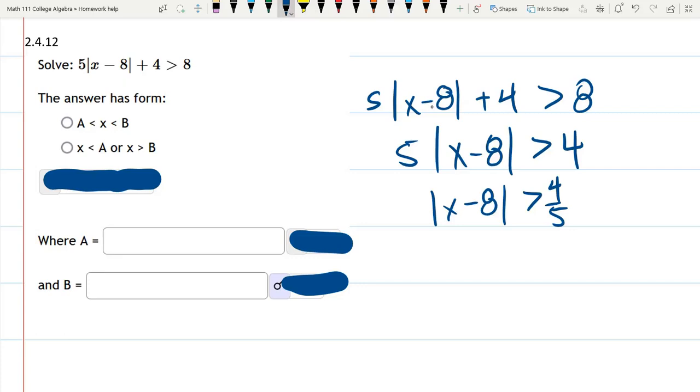4 fifths. Alright, so we're going to stop here for a minute. We have an absolute value, which can never be negative, and it's greater than 4 fifths. So what does that mean?